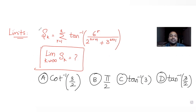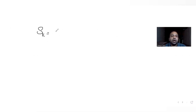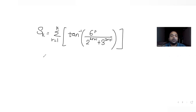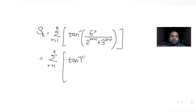Let me try to simplify S_k first. We have the summation of r equal to 1 to k of tan inverse of 6 raised to r upon 2 raised to (2r+1) plus 3 raised to (2r+1). What I can do here is take 2 raised to (2r+1) common from the denominator. So for r equal to 1 to k, you get tan inverse of 6 raised to 2r plus 6 raised to r in the numerator.